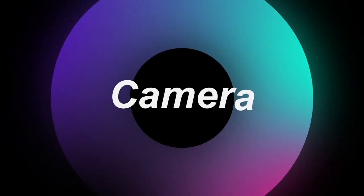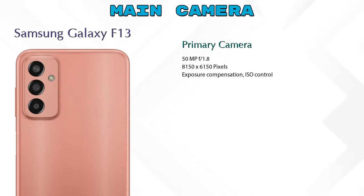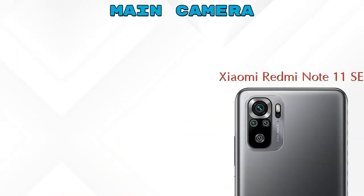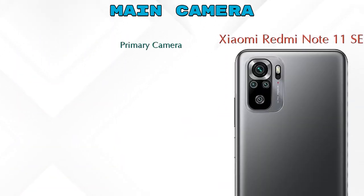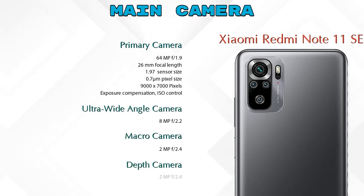Now let's see the details about our favorite feature: camera. First, talking about the rear camera — the Galaxy F13 has three cameras: a primary camera, an ultra-wide angle camera, and a depth camera. The Redmi Note 11 SE has four cameras: a primary camera, an ultra-wide angle camera, a macro camera, and a depth camera.